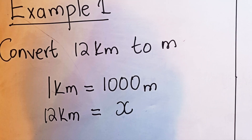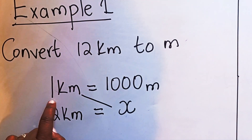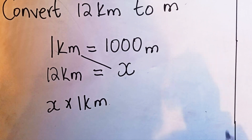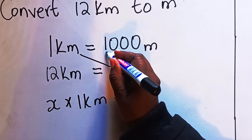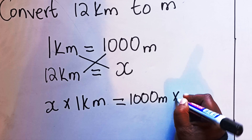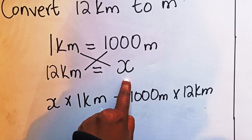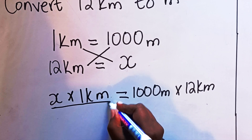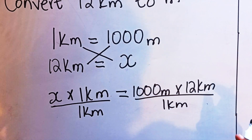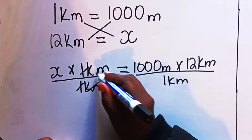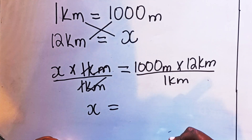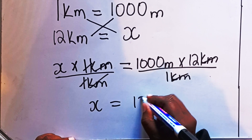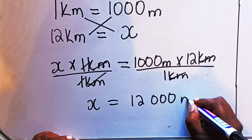You want to find meters, so call them x. Then cross multiply: one kilometer multiplied by x equals 1000 meters multiplied by 12 kilometers. Always start multiplying where you'll get x. To solve for x, divide both sides by one kilometer. The ones cancel, the kilometers cancel, and you're left with x equals 1000 meters times 12.